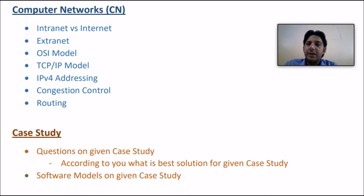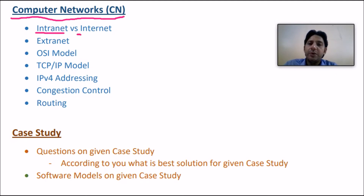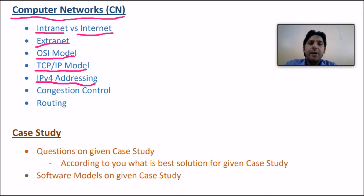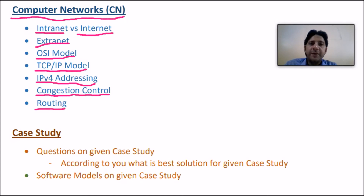For computer networks, companies ask about intranet vs. internet, extranet, and the OSI and TCP/IP models — their different layers, the functioning of those layers, and the network devices placed at each layer. Other topics include IPv4 addressing, subnetting, the difference between IPv4 and IPv6, congestion control, and routing algorithms such as shortest path routing and flooding.